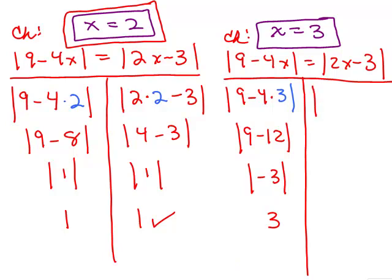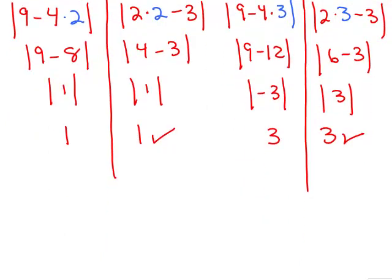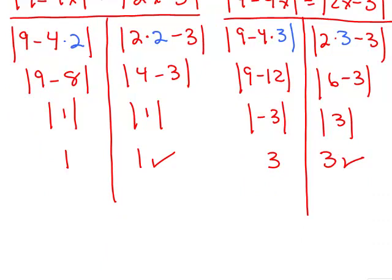On the right side, plugging in x equals 3 and using order of operations: we get the absolute value of 6 minus 3, which is the absolute value of 3, and the absolute value of 3 is 3. So it checks — 3 is also a solution. This particular problem has two solutions: x equals 2 and x equals 3.